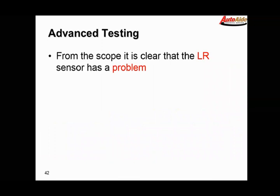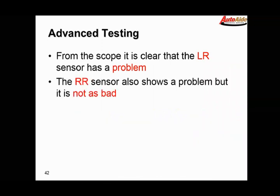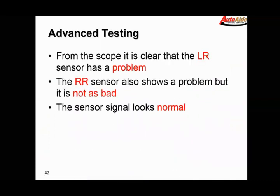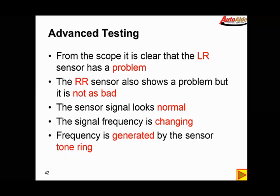From the scope, it's clear that the left rear sensor has a problem. The right rear sensor also shows a problem, but it's not as bad. You can see that here—that's the green trace right above the brown one. It's erratic as well, but it's not as bad. The sensor signal looks normal when viewed on a scope, so we know that the circuitry and the sensor is actually being triggered. But the frequency is changing—not necessarily visible to the naked eye, but it is changing. We know that the frequency is generated by the tone ring. Therefore, this vehicle needs a couple of tone rings to fix this problem.